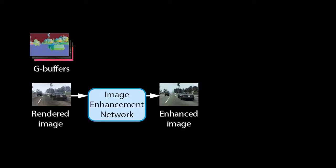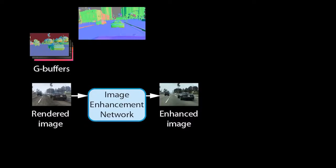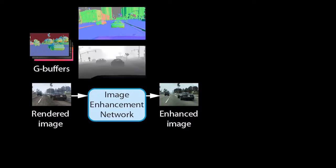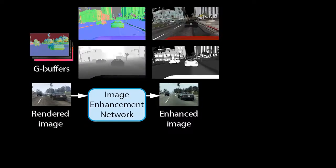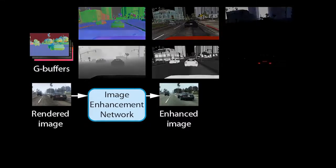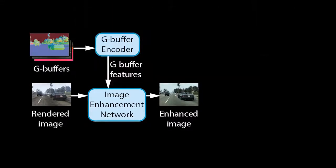G-buffers contain geometric information such as surface normals or distance to the camera, material information such as albedo or glossiness, and may also contain information about the lighting in a scene. We pass the buffers through a G-buffer encoder network to produce feature tensors at multiple scales. The tensors encode the information about the rendered scene.